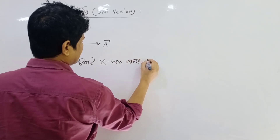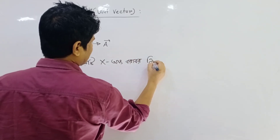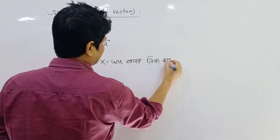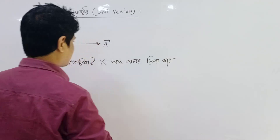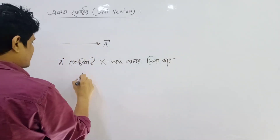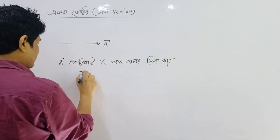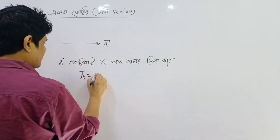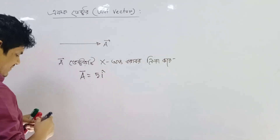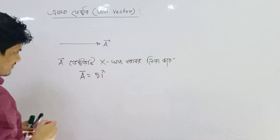It is a 1 dimensional vector. Now the vector means a vector is 5i. We call 5i, so we call a vector here.